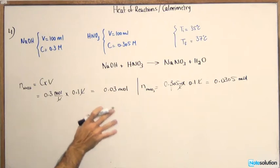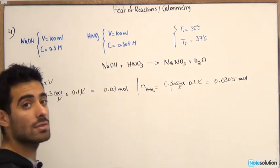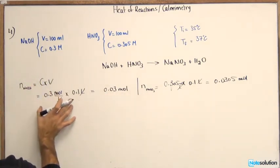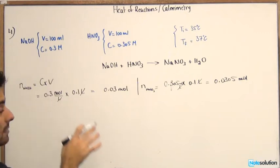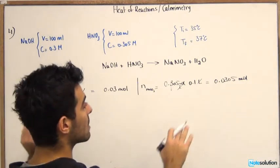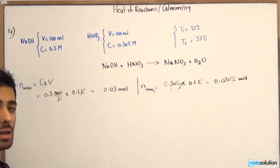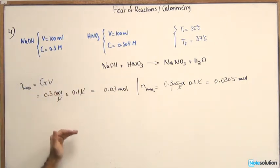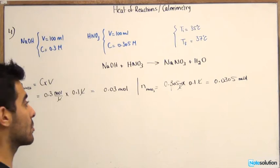So now we found out both values for moles. Now we know that NaOH is the limiting reactant in this reaction. At this point now we're not going to use this in our next step, we're going to use it in the final step when we're calculating delta H reaction.